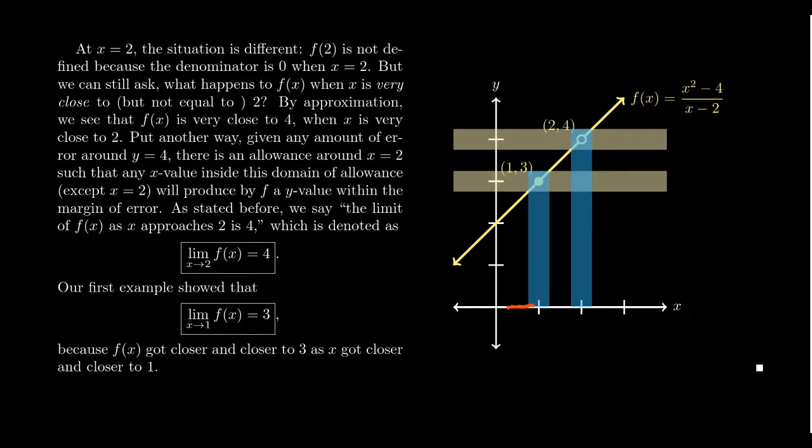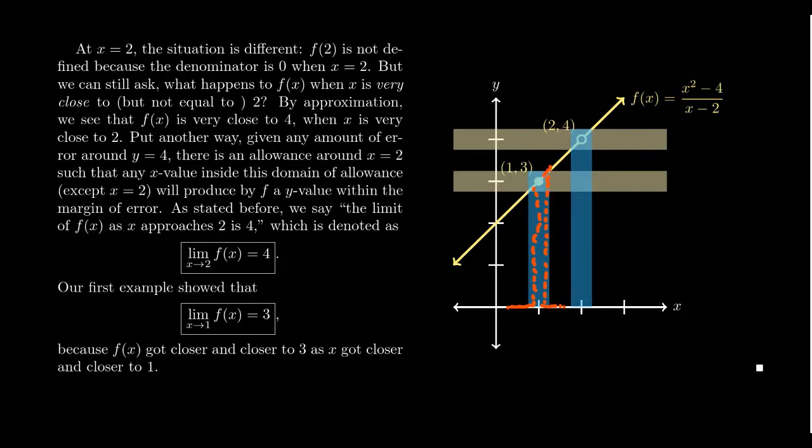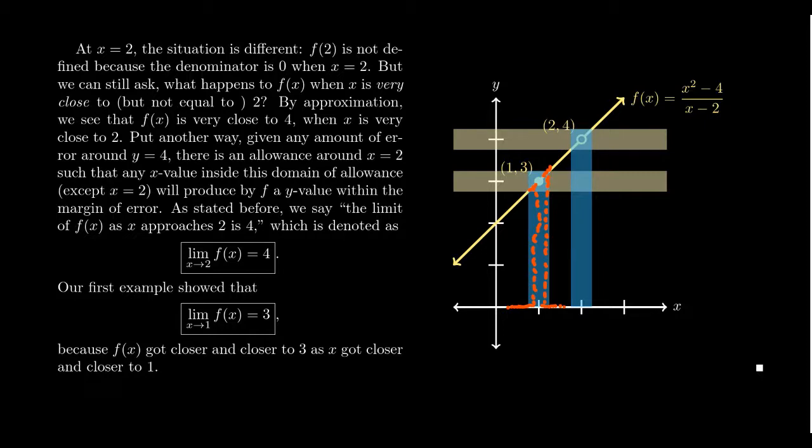Look at this graph. If I get numbers that get really close to x equals one, coming up here and coming up here, your y coordinates will get really close to three. As x gets close to one, f(x) will get close to three. What if we do the same thing for x equals two? As my numbers get super close to x equals two, then on the y axis, your coordinates are going to get really close to four.